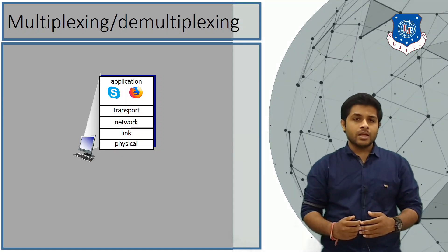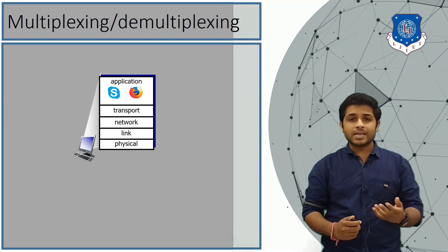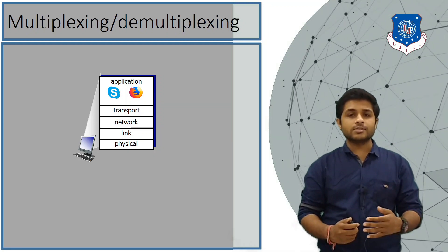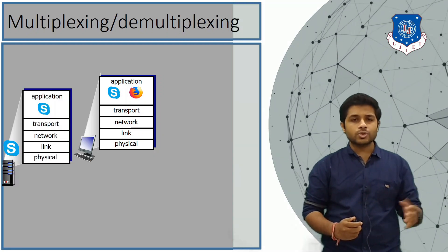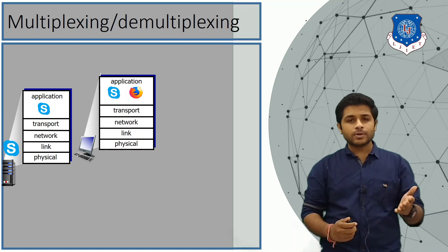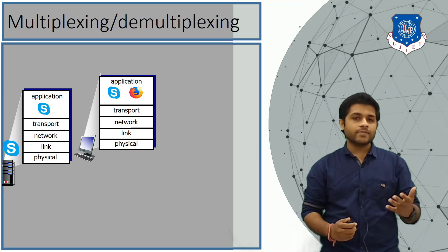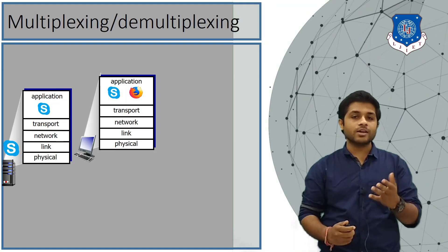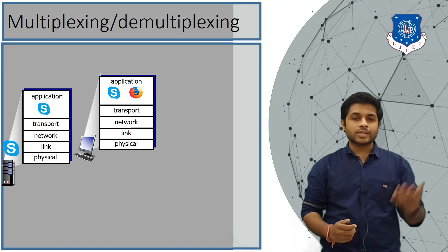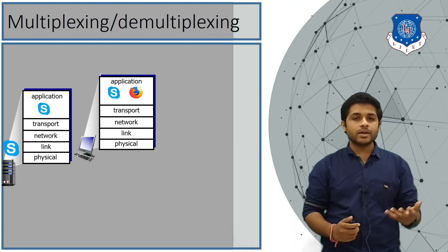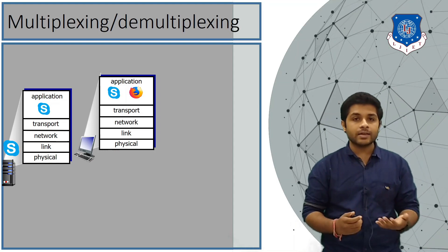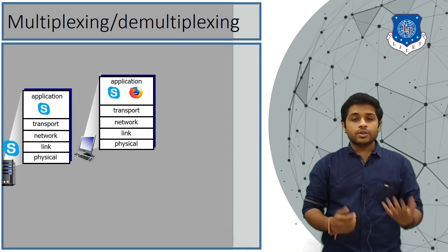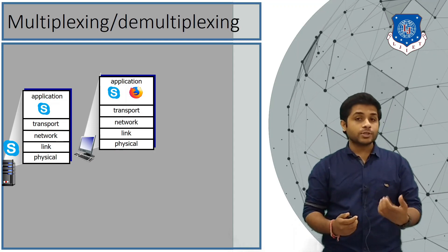Skype has a server that is far away from you. That Skype server also has the same layers as your device: physical layer, link layer, network, transport, and application layer. You also want to open the Amazon website in your browser, so you type www.amazon.com.